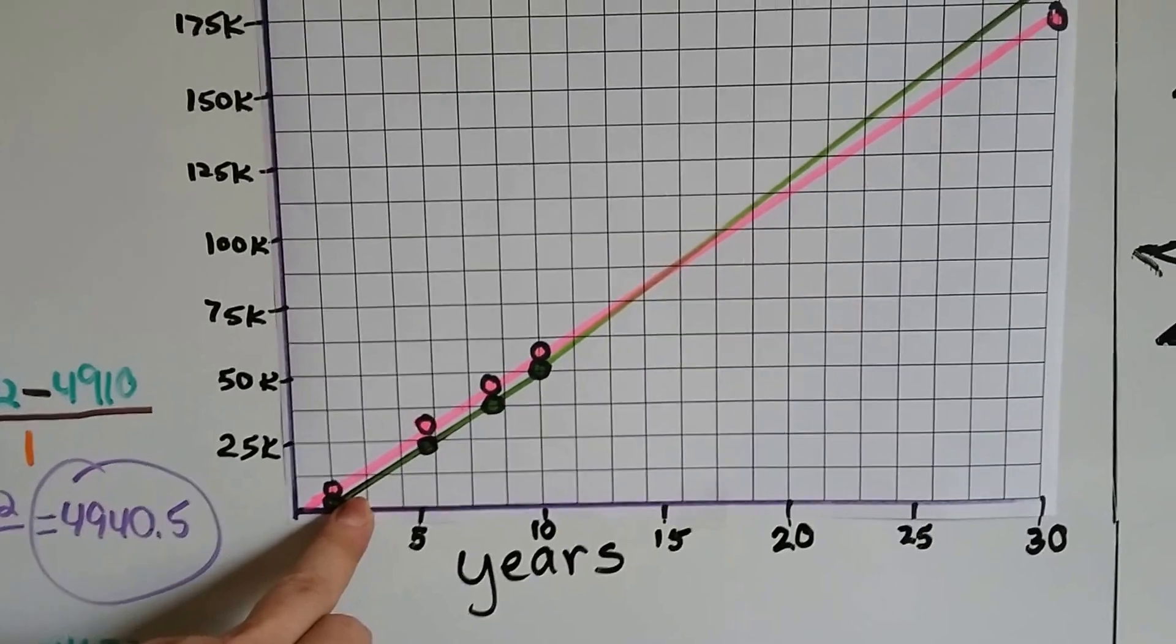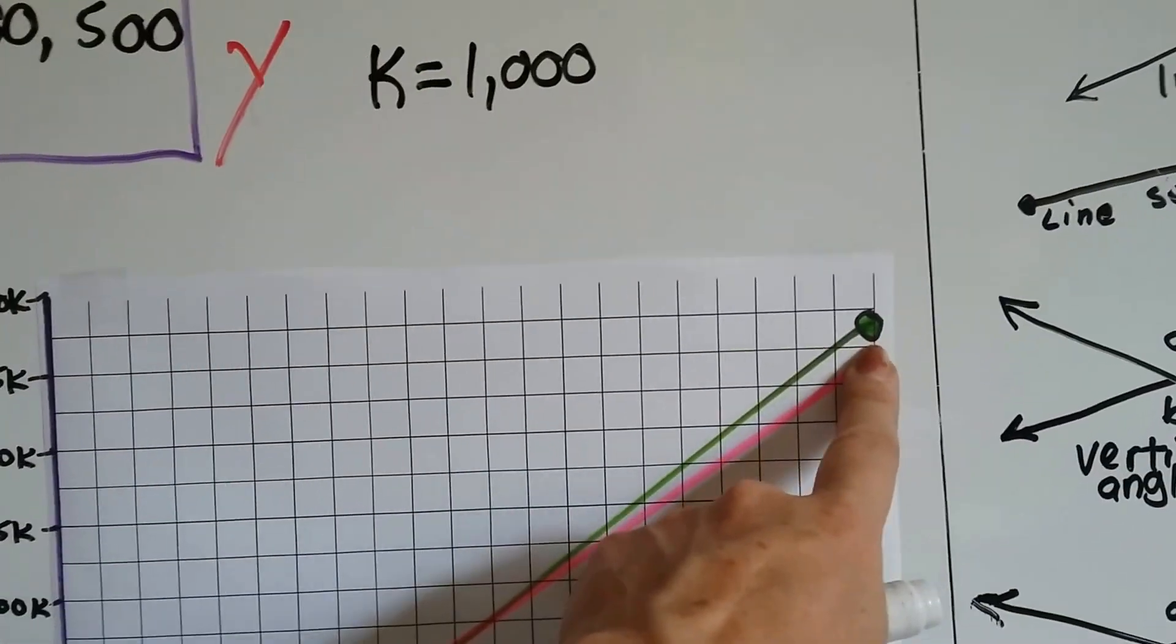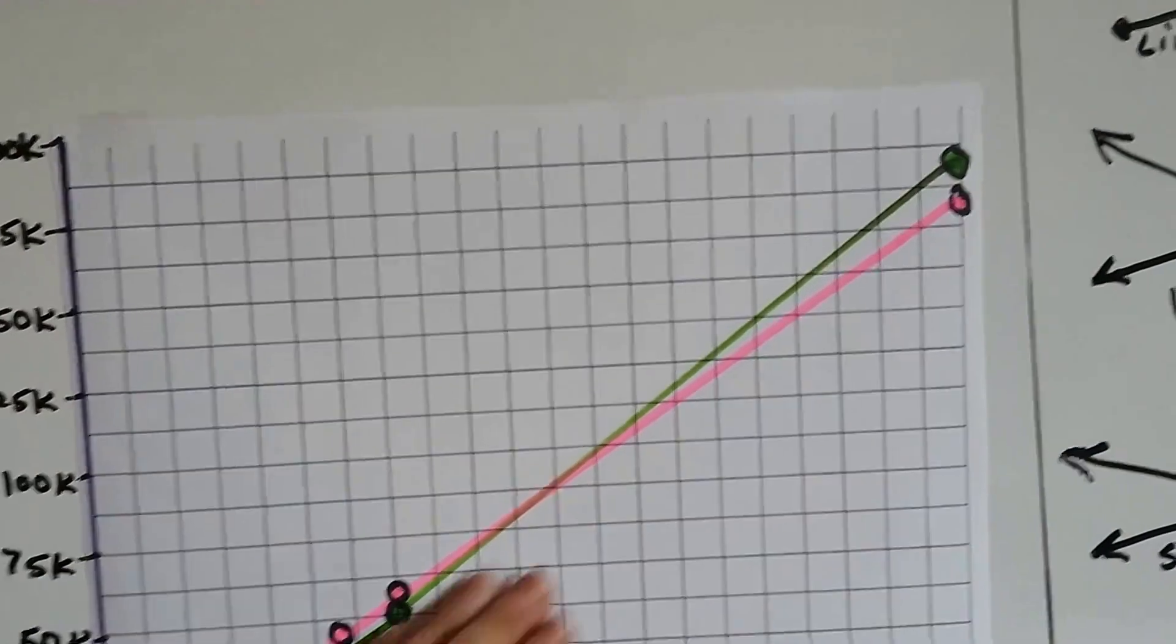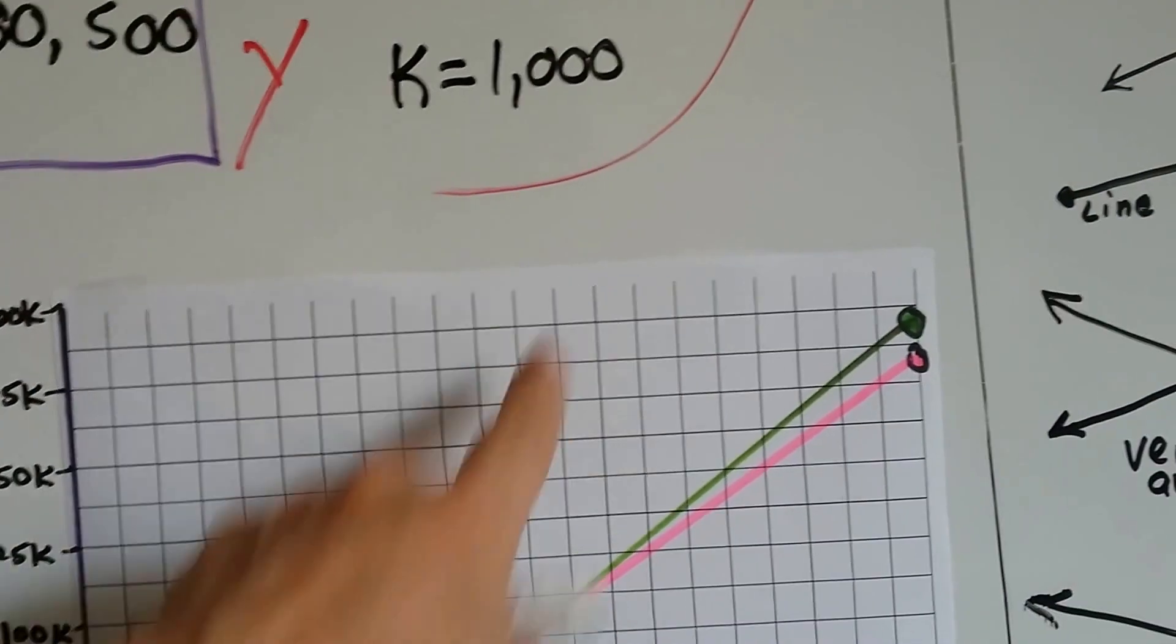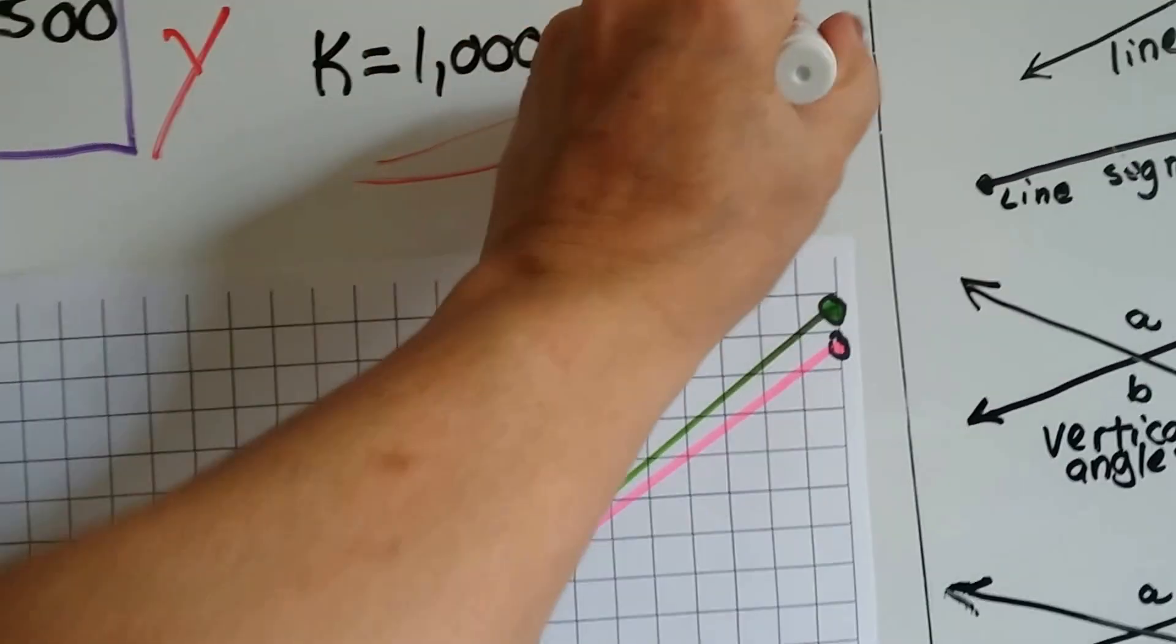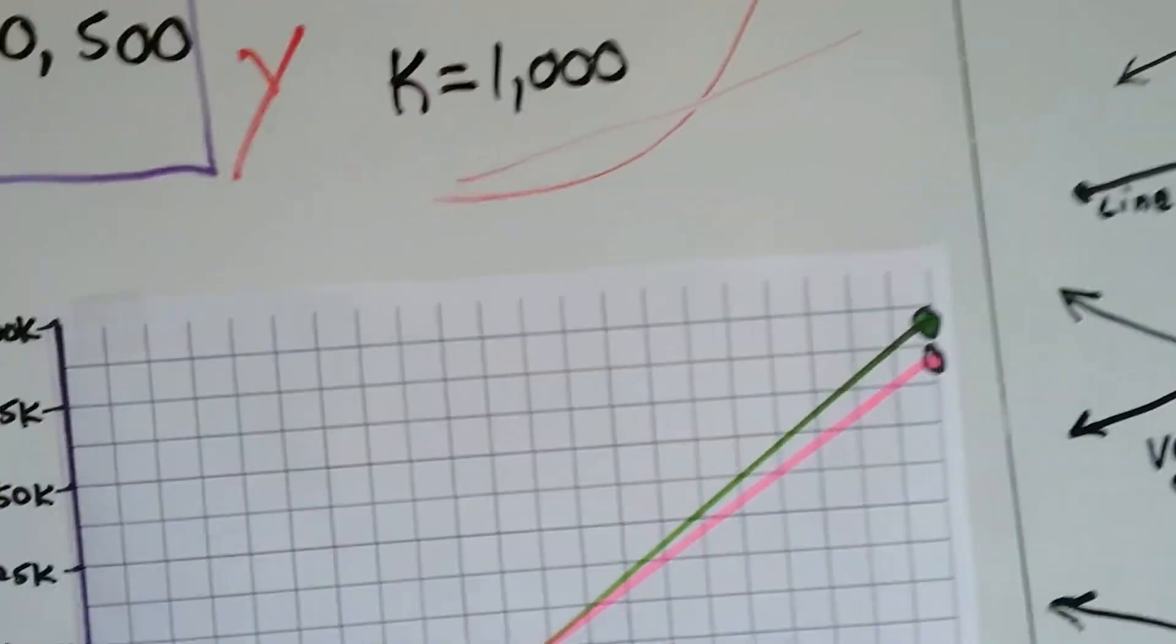It starts out cheaper than the pink one, but look, it ends up being more expensive. So it actually has a slight curve to it because it started out cheaper and then became more expensive, while the other one had a steady rate of change.